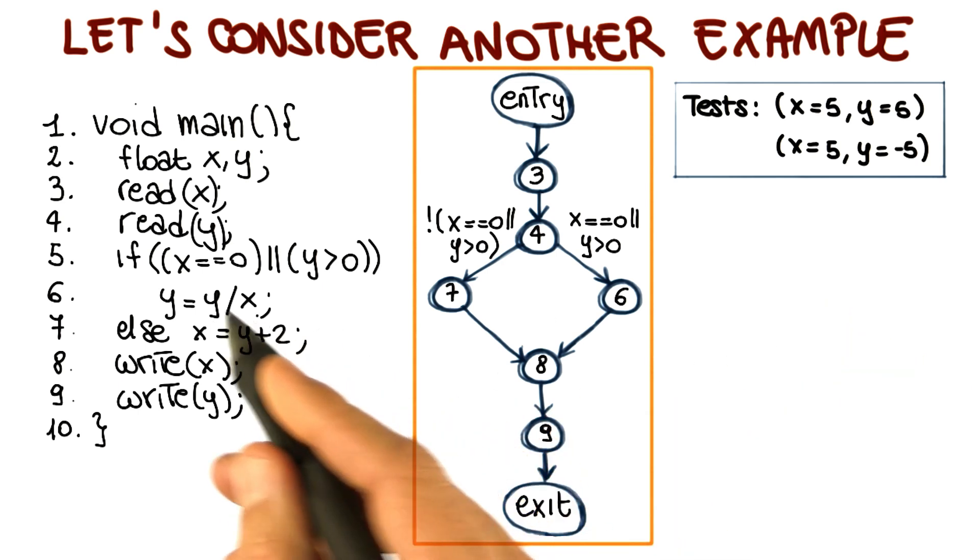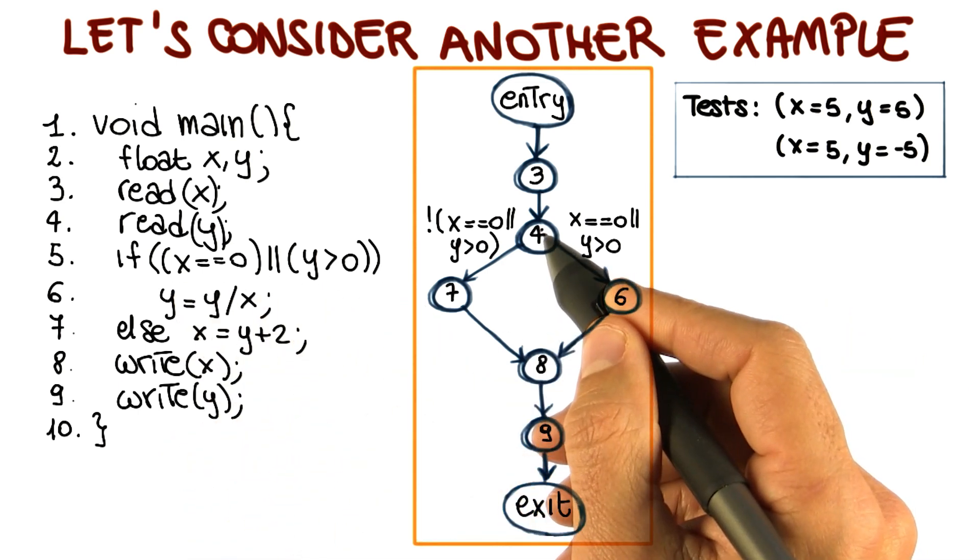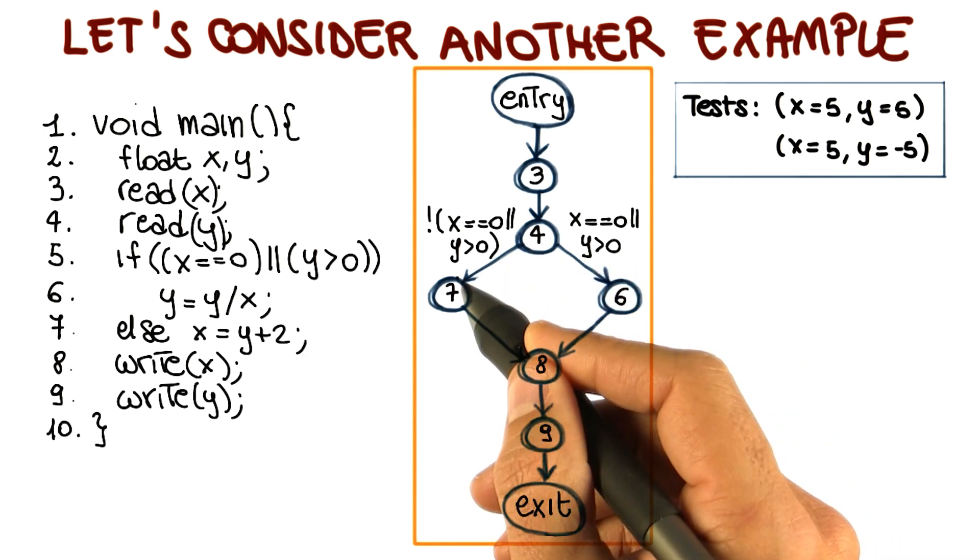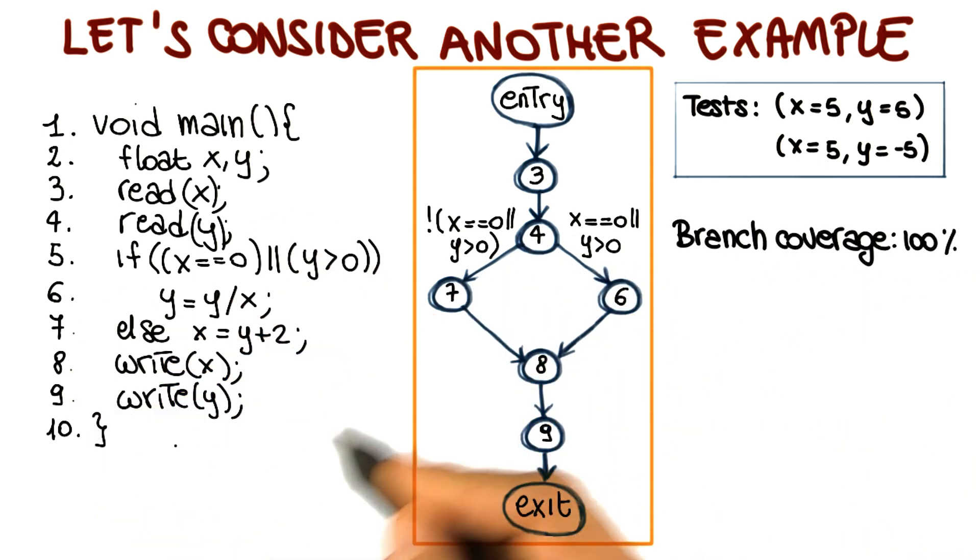For the second one, the condition is false because x is not equal to 0, and y is not greater than 0. Therefore, the negation of it is true, and we will follow this branch. In other words, these two test cases achieve 100% branch coverage on this code.